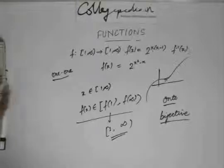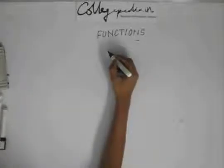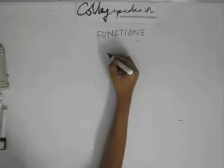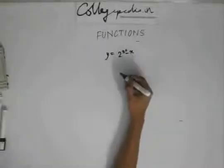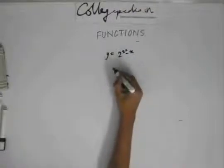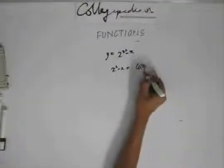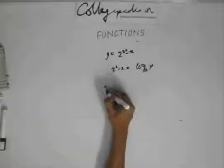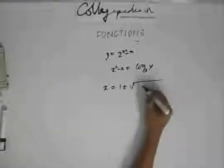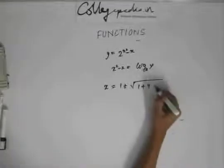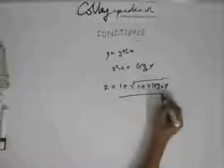Now we need to find the inverse of this function. So this is the function. I can write x squared minus x as equal to 4 log y to the base 2. So to find the inverse, I will find x in terms of y. To find x in terms of y, I need to solve this quadratic.